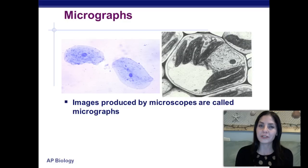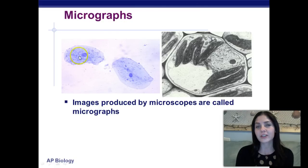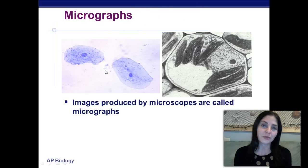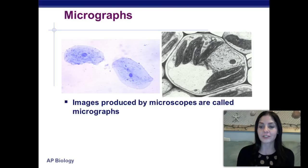Micrographs are basically just pictures taken from a microscope. The images down here are called micrographs. This right here is actually from a cheek cell — that's something we're going to do later in the year. We're actually going to swab our cheeks and extract DNA from our cheek cells.